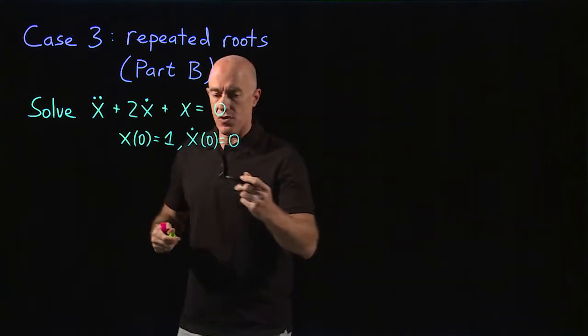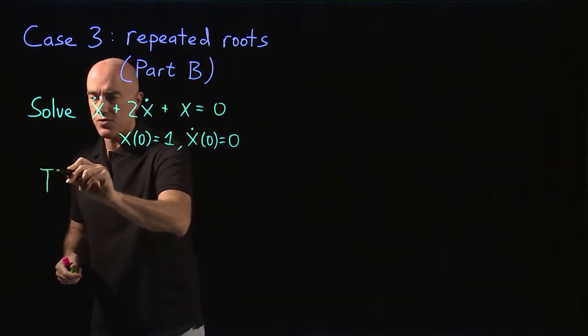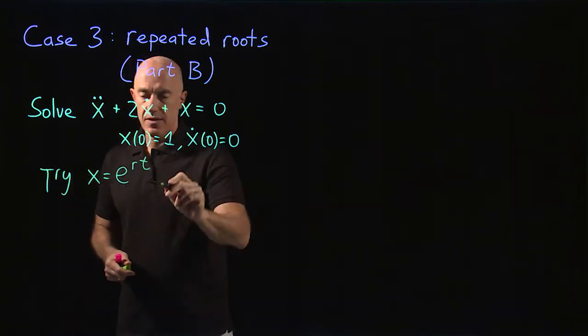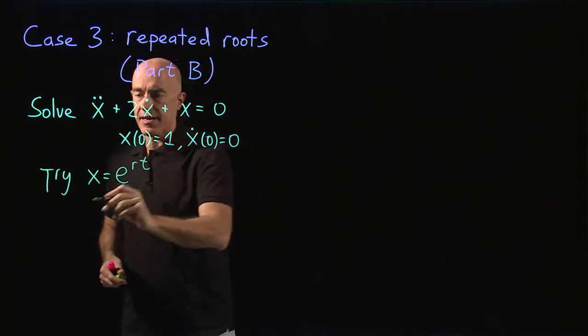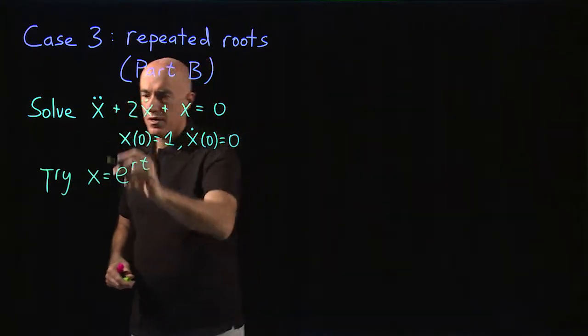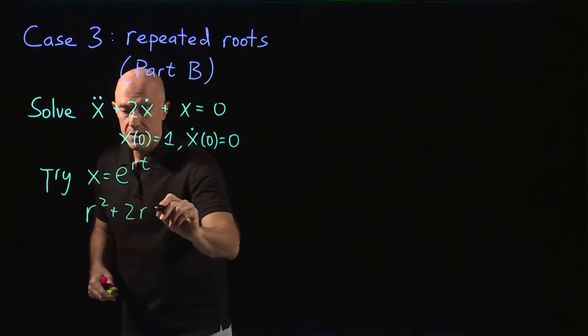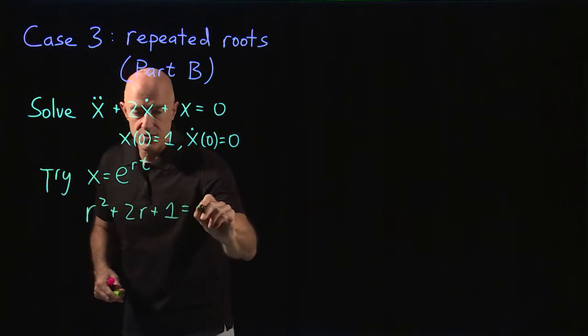We make our usual ansatz. We try x equals e to the rt and we obtain the characteristic equation, which will be r squared plus 2r plus 1 equals 0.